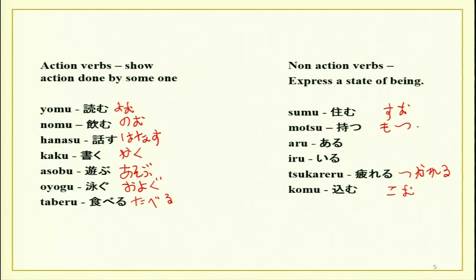Sumu means to live, motsu means to have or to possess, tsukareru means to be tired, and komu means to be crowded — all verbs you already know. With these words we are going to learn continuous tense in Japanese: how to say that a certain activity is happening over a period of time. For example, 'I am eating' means I am eating now and will continue for another five to seven minutes — it is an ongoing temporary action, equivalent to the -ing form in English.